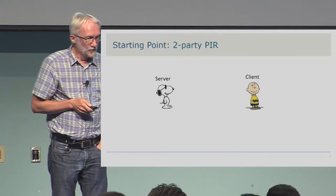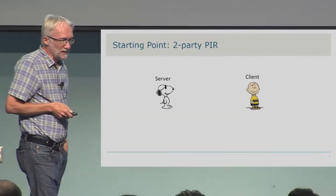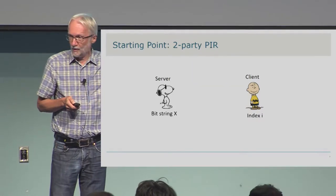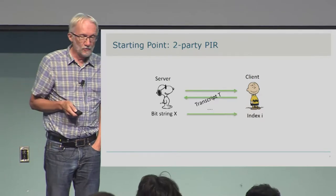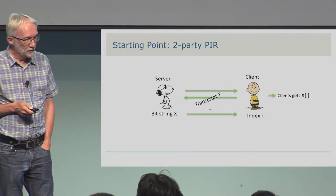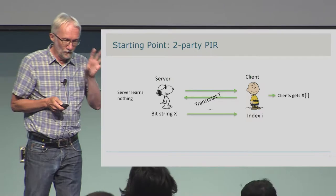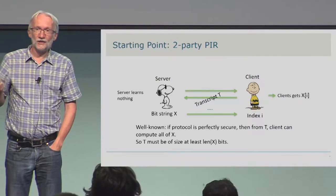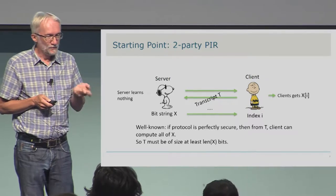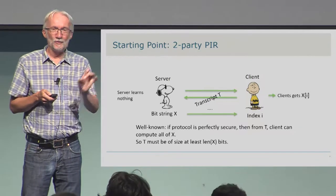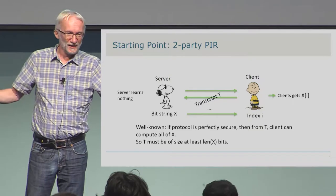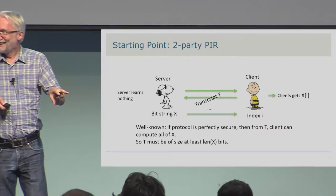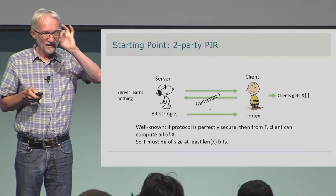The starting point for our results is two-party private information retrieval. There's a server with a bit string X and a client with an index i pointing to some position in X. They communicate, forming a transcript T, and at the end the client can compute the i-th bit of X, while the server should not learn anything. The only fact I need here is that if this protocol is perfectly secure, then from the transcript the client can always compute all of X. This is intuitive: because of the privacy requirement, if the transcript missed information about some part of X, the server could conclude that's not the part the client wants. So all of X has to be there somehow.